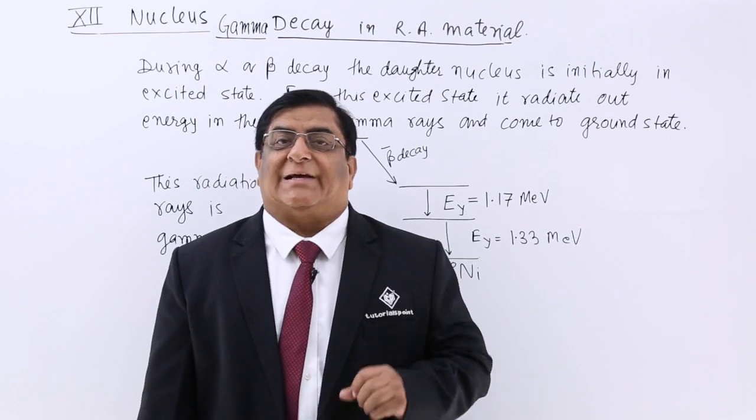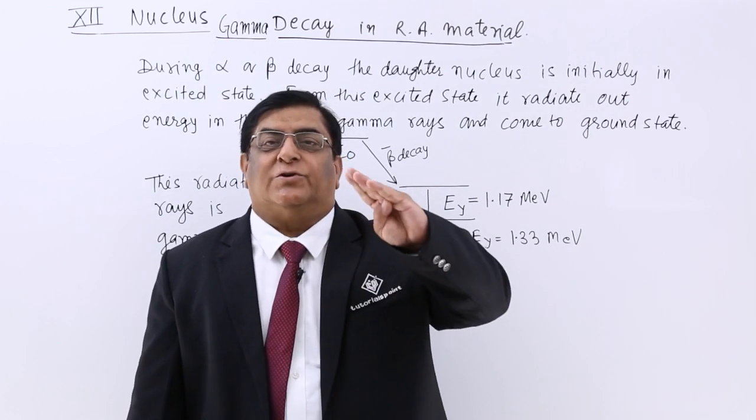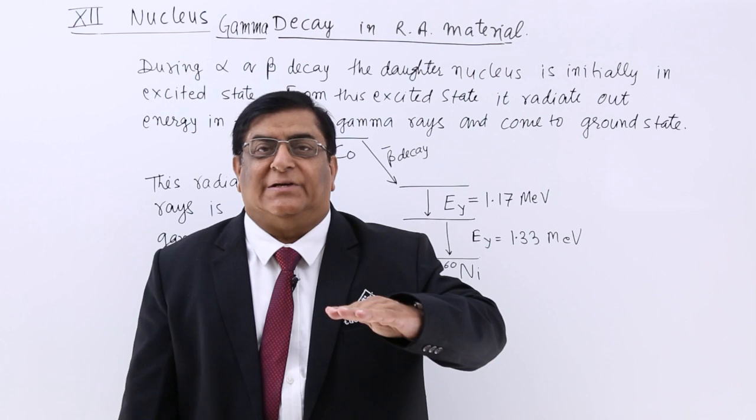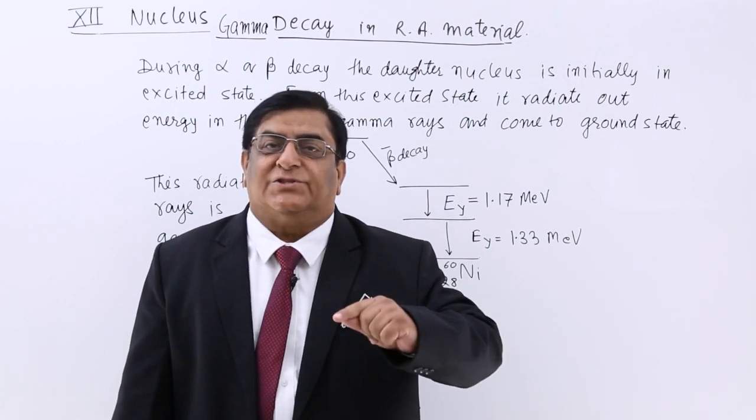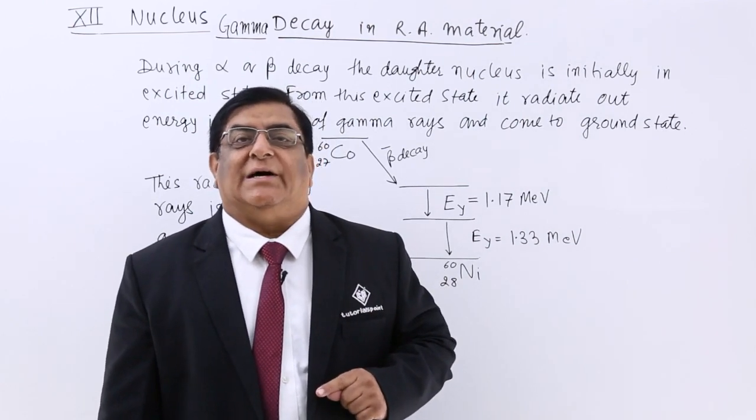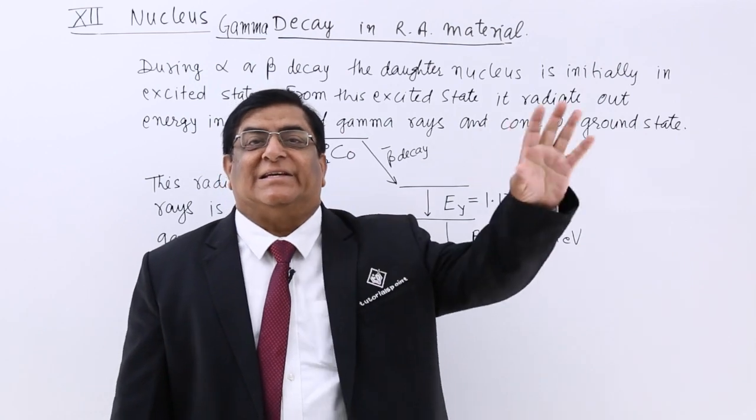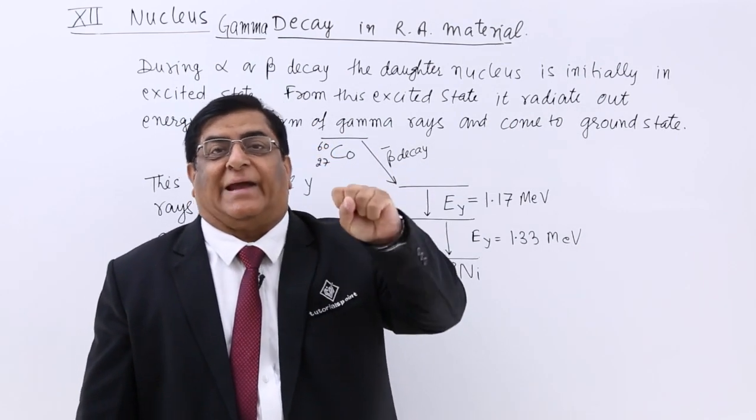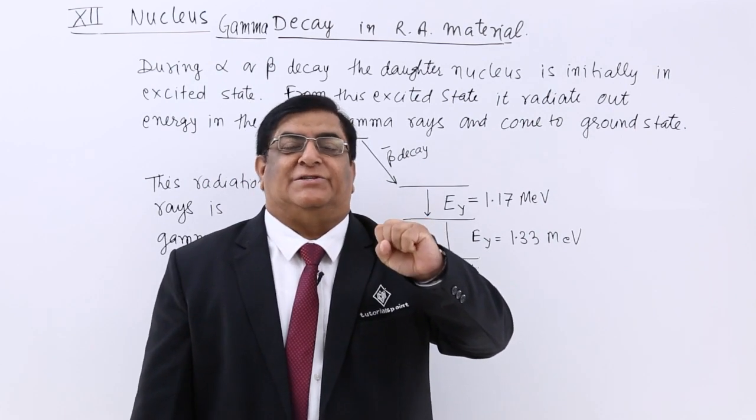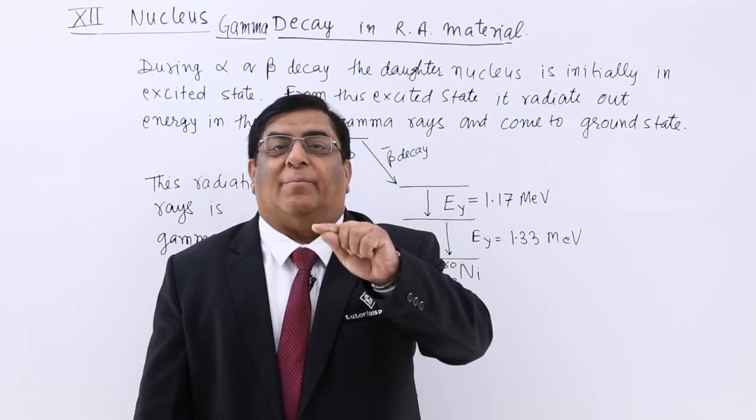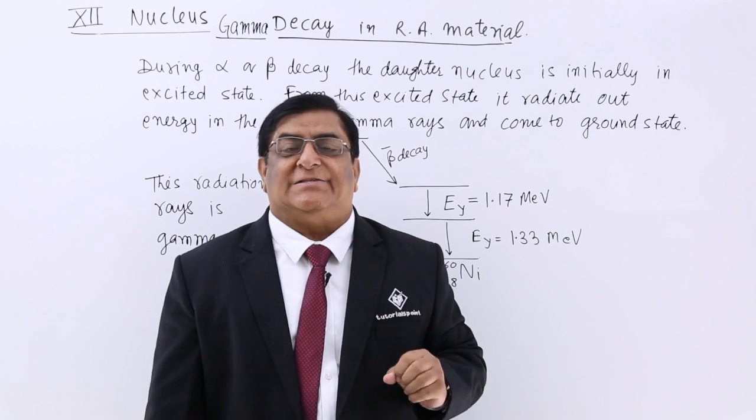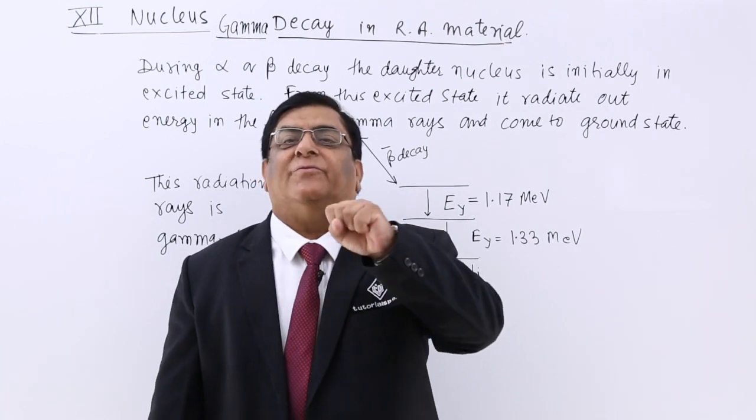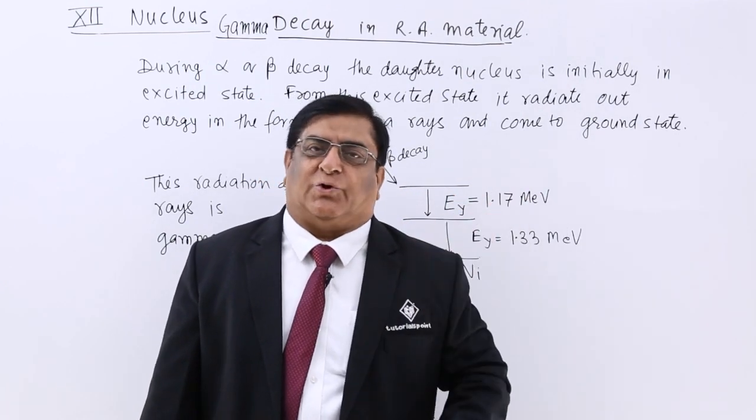From that excited state, it wants to come to the level of its minimum energy that we call ground state. So what it does? It is ejecting out the energy packets, energy in packets and that packet of the energy is known as gamma rays in the language of rays or you can say gamma photon in the language of photons.